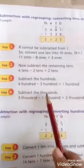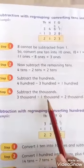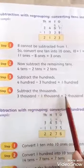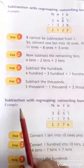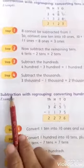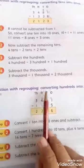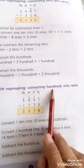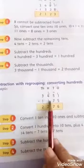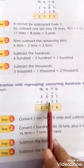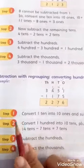In step 3 you have to subtract the hundreds column: 400 minus 300 equals 100. In step 4 you have to subtract the thousands: 3000 minus 1000 equals 2000. Now students, here is another example — subtraction with regrouping, converting hundreds into tens. Here is an example of a four-digit number. You have to follow the four steps.